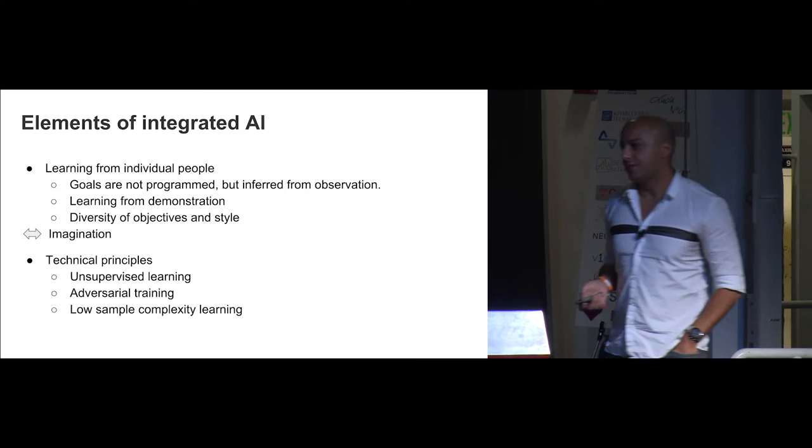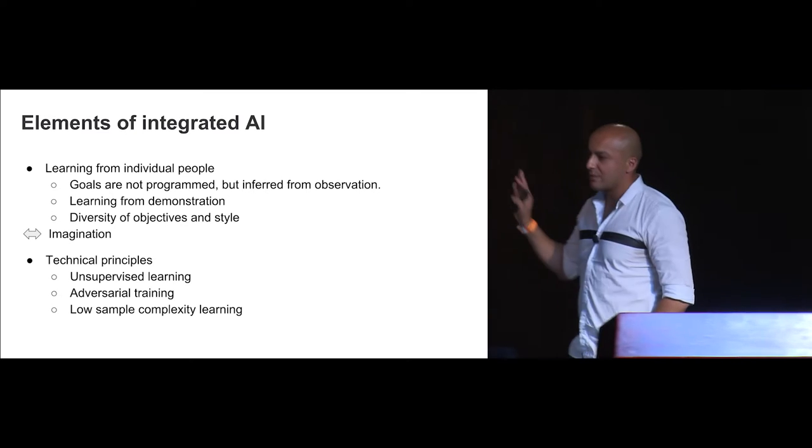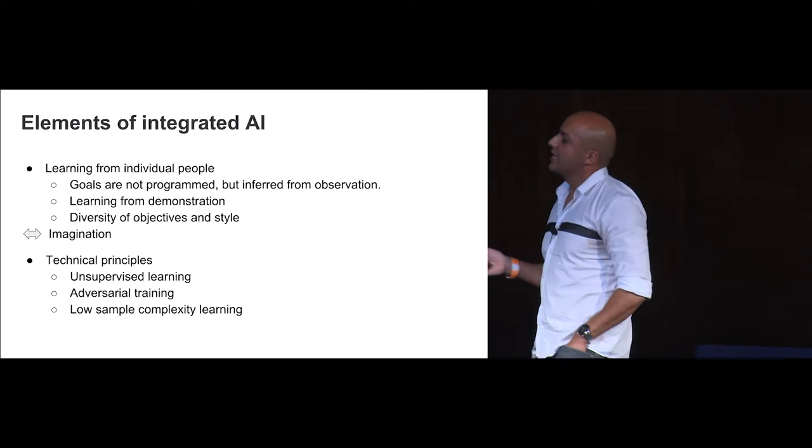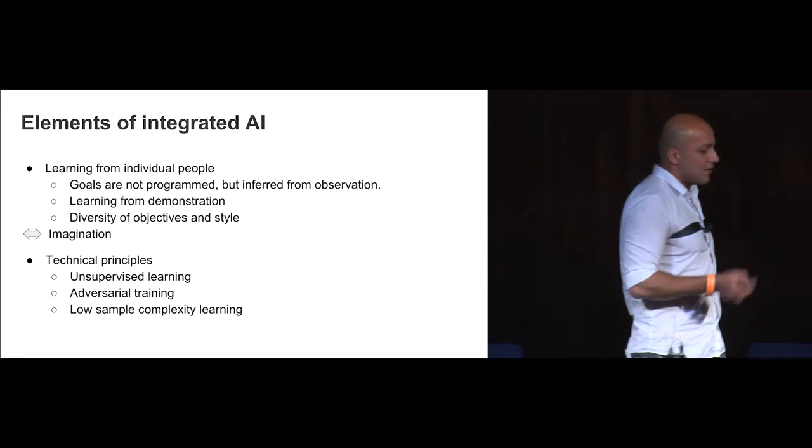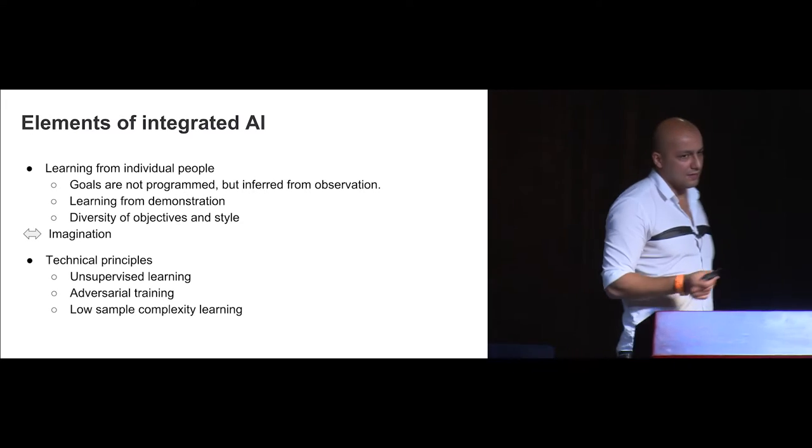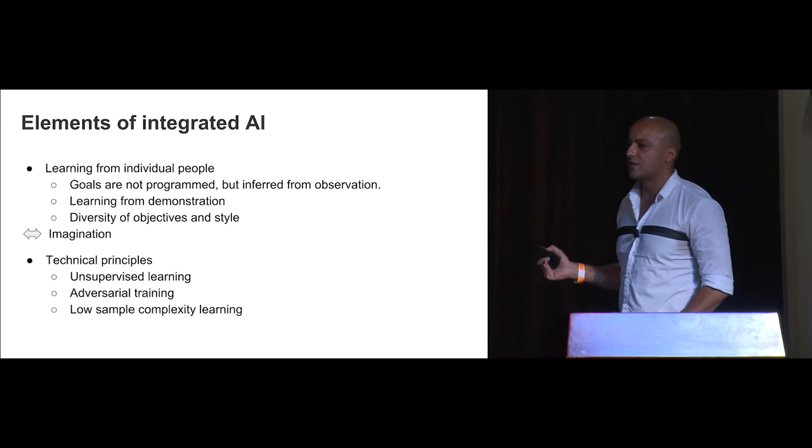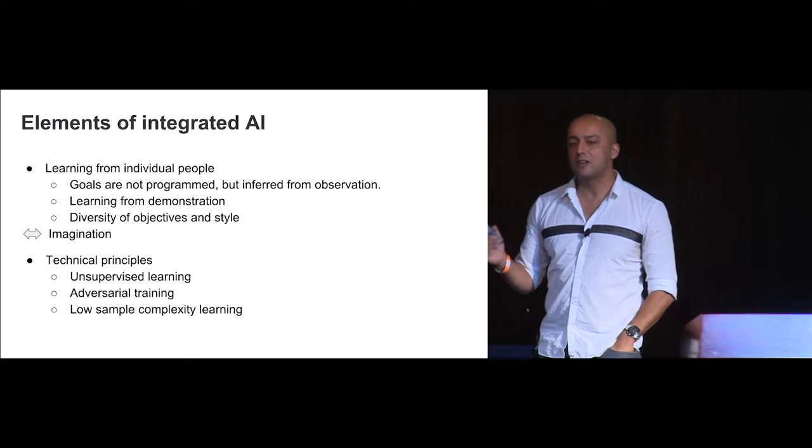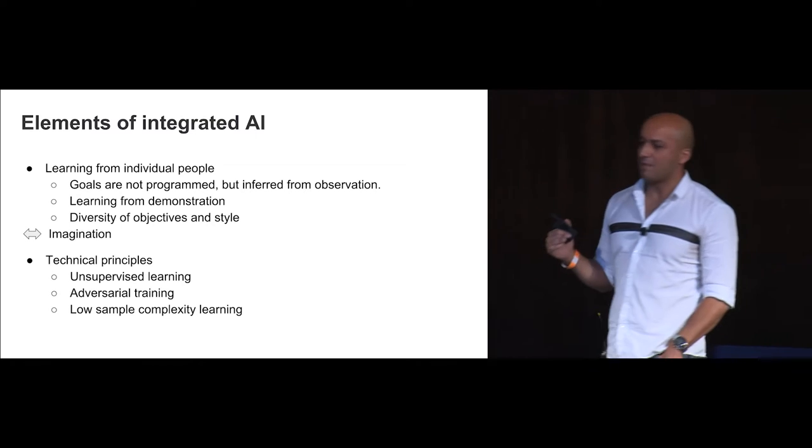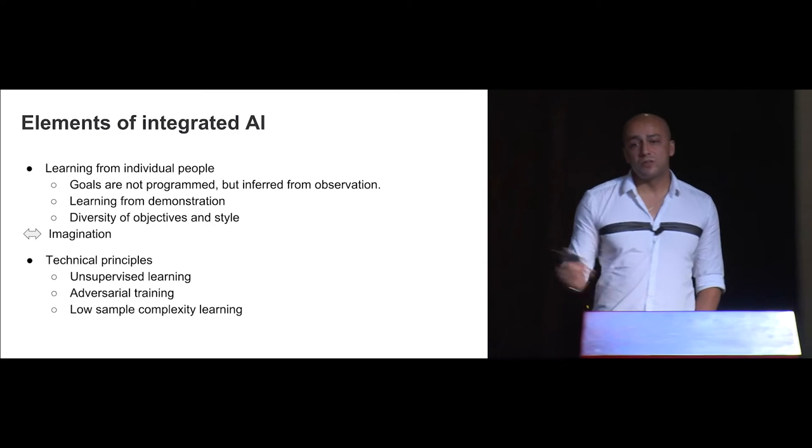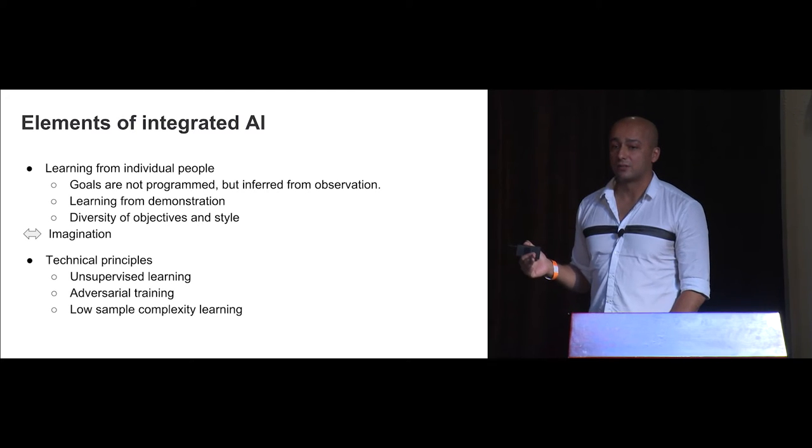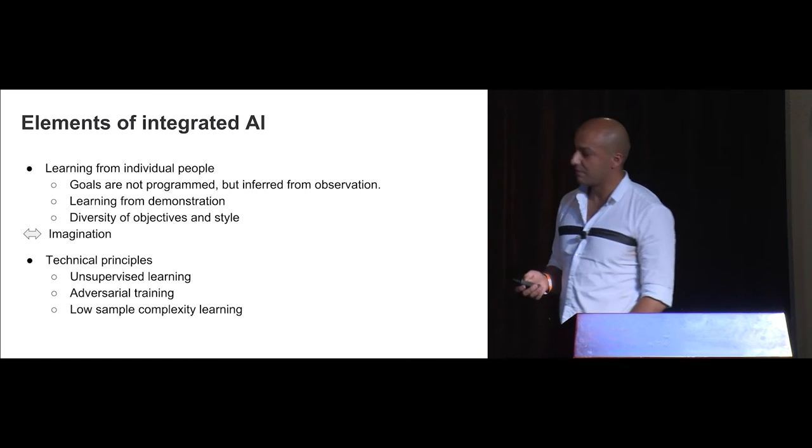So it is kind of like a Turing test, but instead of a human and a computer, we have a computer against a computer. The third technical thing, and there will not be technical things after this, is the low sample complexity learning, which is the idea of learning with small data. Right now, there's a lot of talk about big data, but I think the future is for small data. Because if you want to learn about you, we have to be able to do it from one or two examples only of watching. That's essential for imagination.